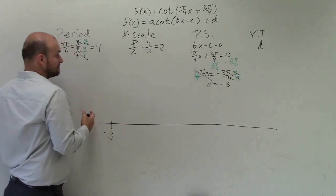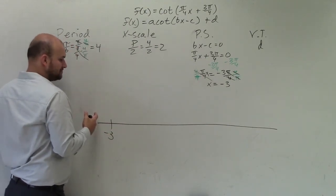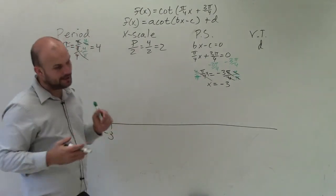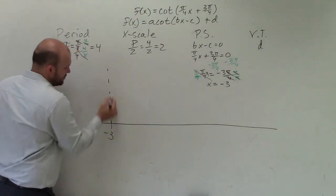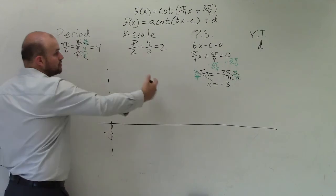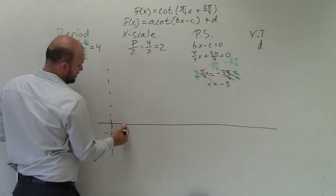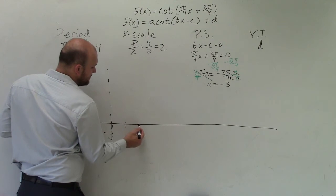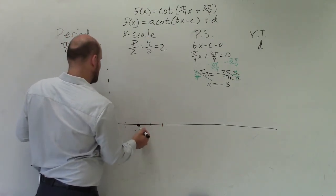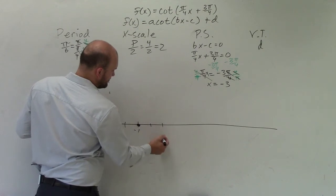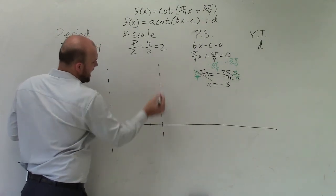So the x-scale is 2. Remember, where I started, that was the asymptote. So then I need to go two more units. So that'd be negative 2, negative 1. That's going to be my next intercept. Go two more units. That's going to be at 0, and this would be at 1. That's going to be my next asymptote.